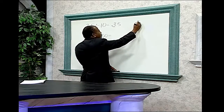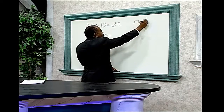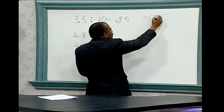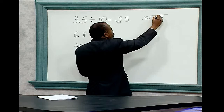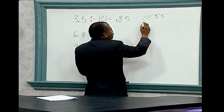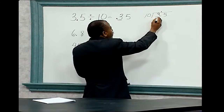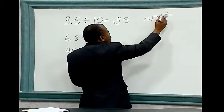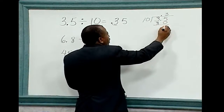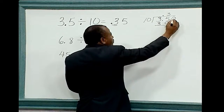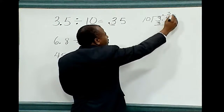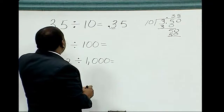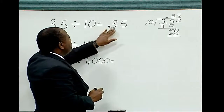Another way to do this problem is to divide three point five by ten using long division. The first thing we need to do is place the decimal point in the answer above the decimal point that is located in the problem. Next, ten won't divide into three, so we divide ten into thirty-five — three times. Three times ten is thirty; subtract, giving five. Add a zero, bring the zero down. Ten divides into fifty five times. Five times ten is fifty. Therefore, three point five divided by ten equals point thirty-five.